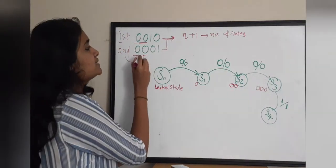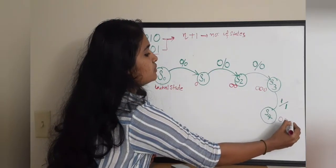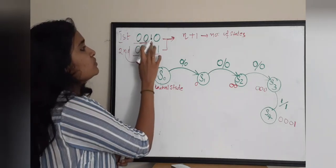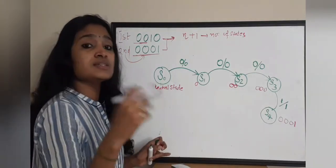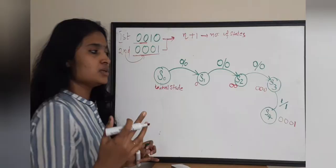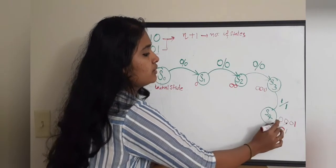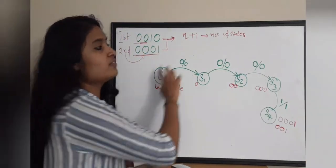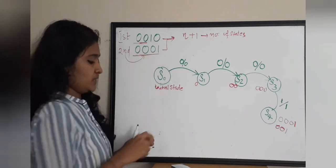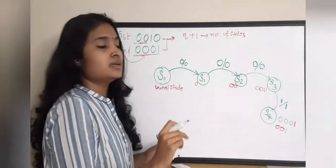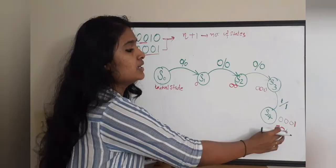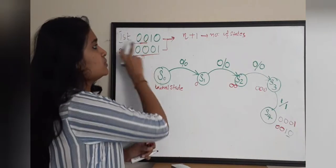In S4 state we have the second sequence 0 0 0 1 entirely. Notice that the last three bits 0 0 1 also match the start of the first sequence 0 0 1. So S4 already holds 0 0 1, and to complete the first sequence 0 0 1 0, we only need one more 0.